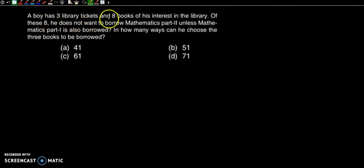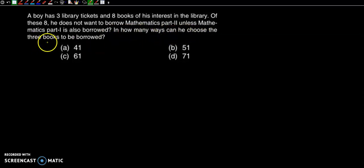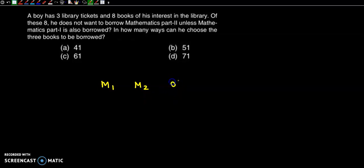A boy has 3 library tickets and 8 books of interest. Of these 8, he does not want to borrow Maths Part 2 unless Maths Part 1 is also borrowed. We categorize the 8 books as: 1 Maths Part 1, 1 Maths Part 2, and 6 others.